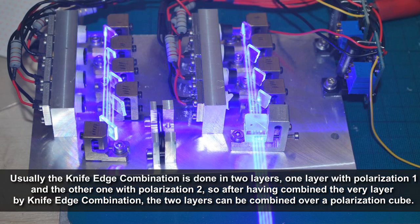Usually the knife-edge combination is done in layers. One layer with polarization 1 and the other with polarization 2. After combining each layer by knife-edge combination, the two layers can be combined over a polarization cube.